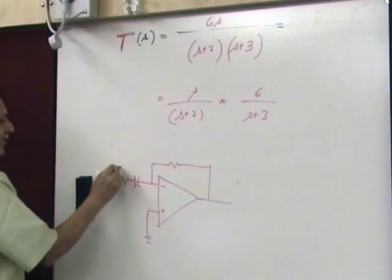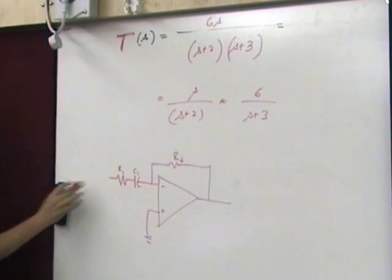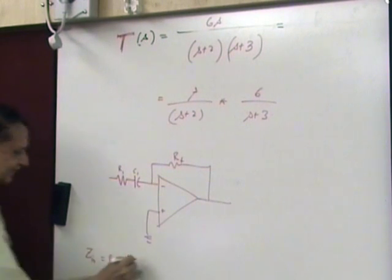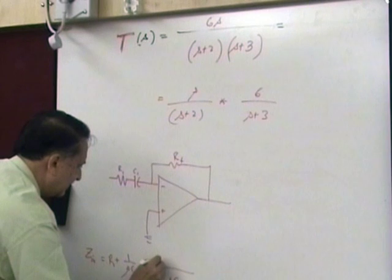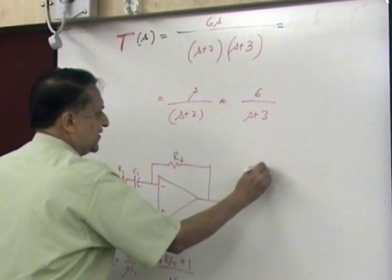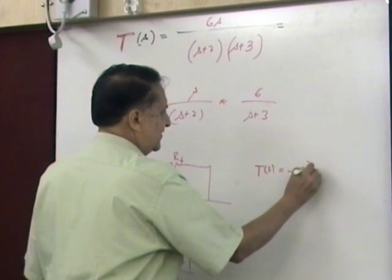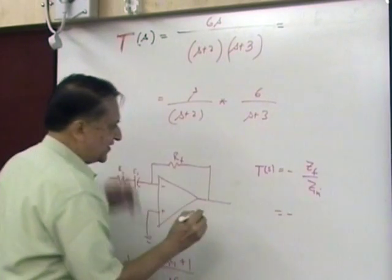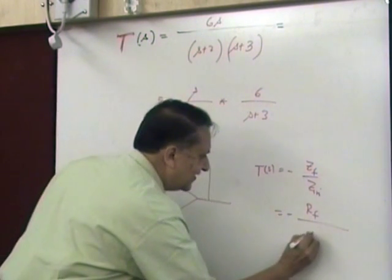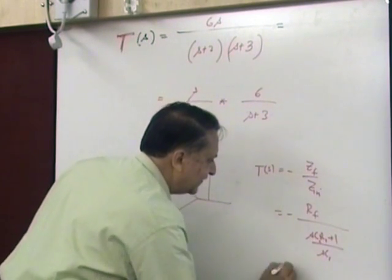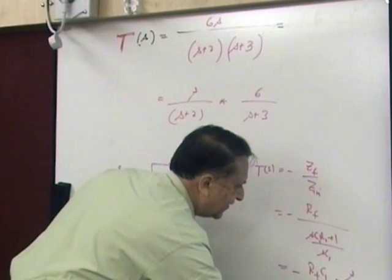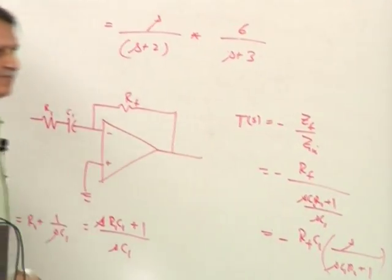This is my Z_in. We call it R1, C1, and this is simply R_f. So what is the Z of this? Z_in = R + 1 over sC1. My output transfer function is minus Z_f over Z_in. Minus Z_f is a simple resistor R_f. So it becomes minus R_f times C1 times s, divided by s·C1·R1 plus 1. I got that.